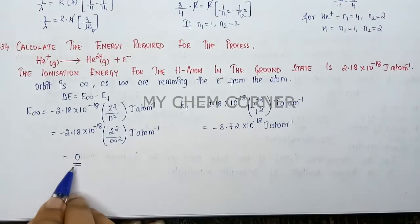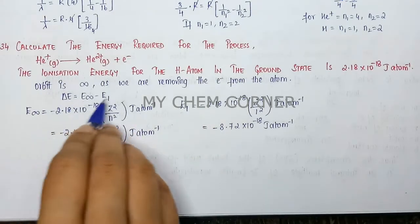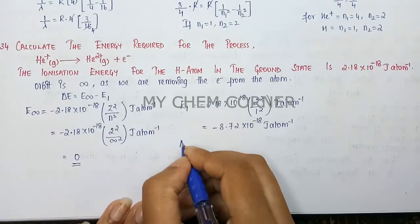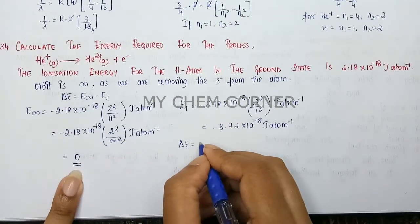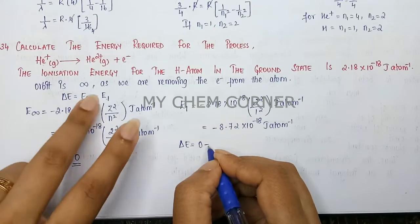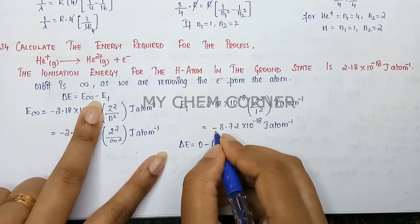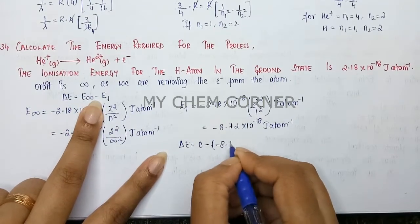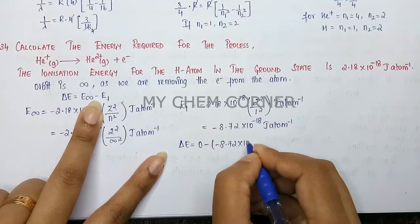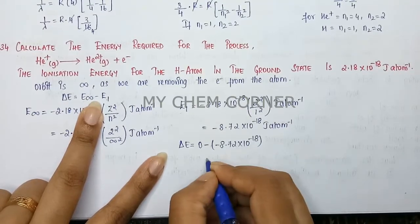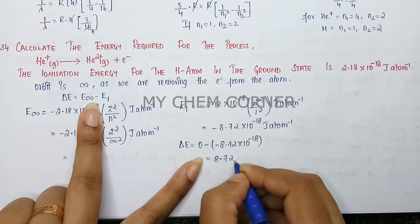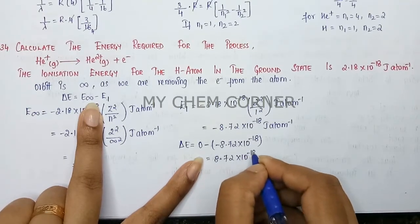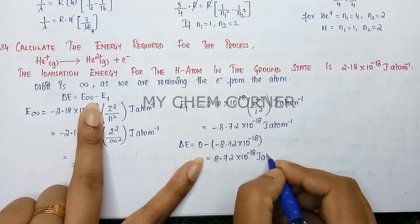Now I know the energy for infinity and the first state. Let's calculate. ΔE = E∞ - E₁. E∞ is zero, minus the negative value from E₁: 0 - (-8.72×10⁻¹⁸) joules per atom. The answer is 8.72×10⁻¹⁸ joules per atom.